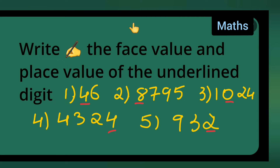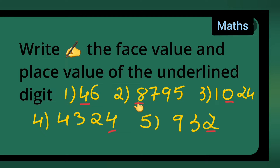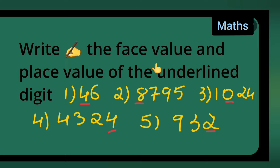In today's mathematics class, let us write the face value and place value of the underlined digit. The first number is 46, where 4 is the underlined digit. Second is 8795, where 8 is underlined. Third is 1024, where 0 is underlined. Fourth is 4324, where 4 is underlined. Fifth is 932, where 2 is the underlined digit.